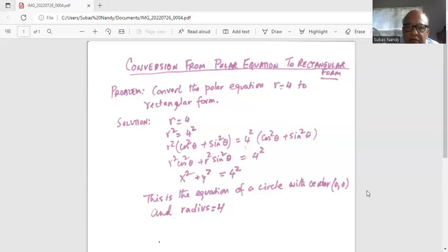This is the equation of a circle with center zero zero and radius four.